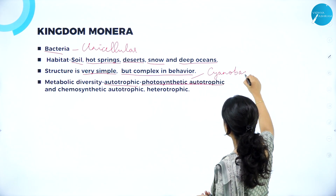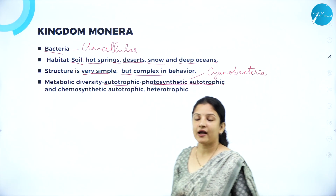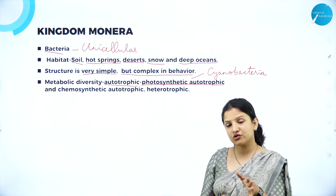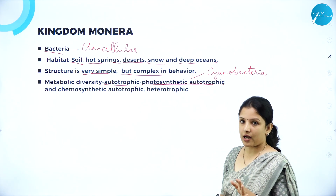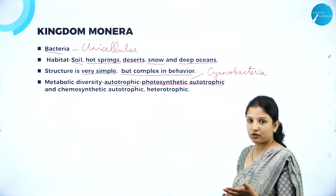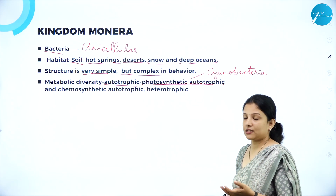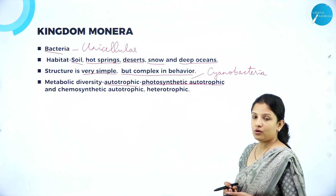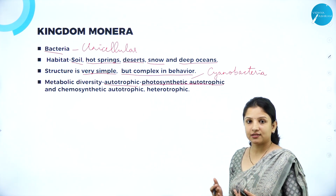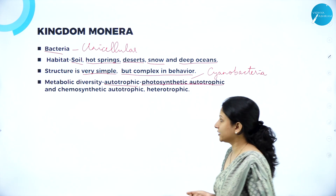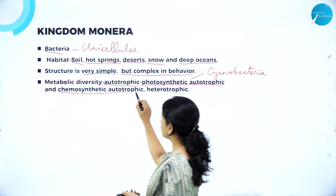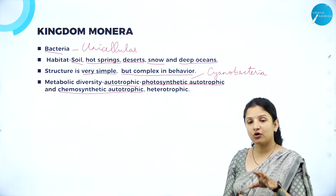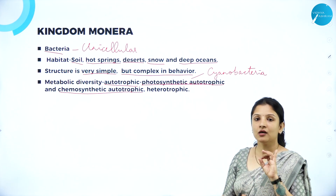Cyanobacteria is also called blue-green algae. Cyanobacteria has chlorophyll A pigments in them. That is why they are also called blue-green algae because they show some of the characteristics that are similar to algae. But because they are unicellular and majority of the times they have characteristics like that of a bacteria, they have been put under Kingdom Monera and are named cyanobacteria. They are photosynthetic because they are capable of synthesizing their own food as they have chlorophyll pigment in them. And they can be chemosynthetic autotrophs.